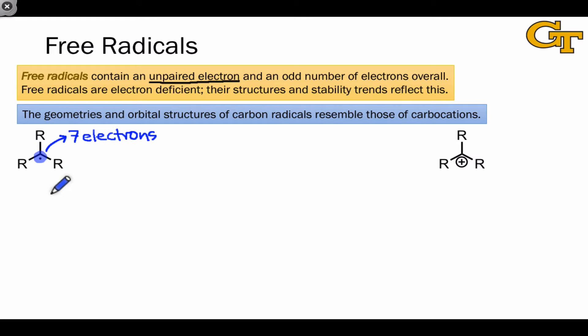As we see in this example on the left-hand side of the slide, because 7 is less than 8, and the radical carbon would like to have 8 electrons to satisfy the octet rule, free radicals are electron-deficient, or electron-poor, in general. Their structures and stability trends reflect this, and the closest analogous structure is one in which the radical electron is simply missing. This would be a carbocation.